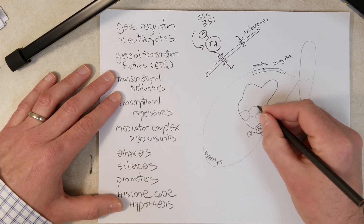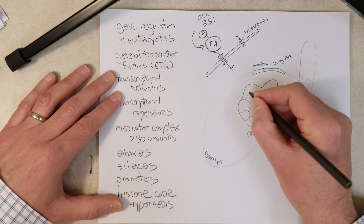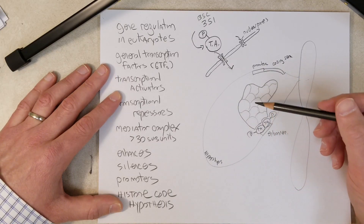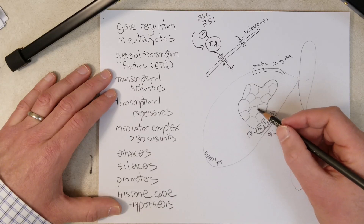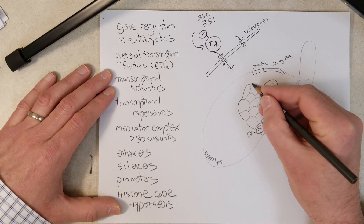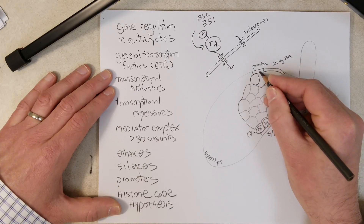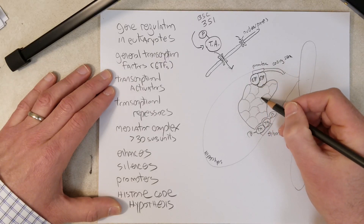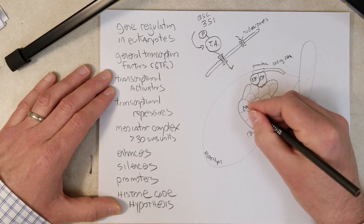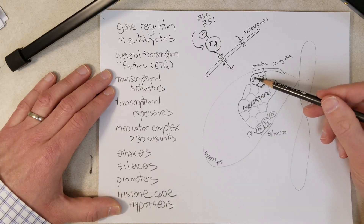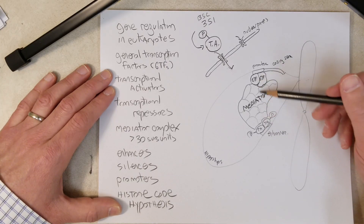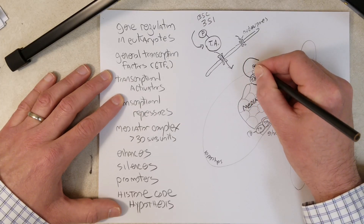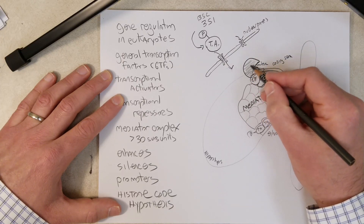You can imagine over 30 different proteins interacting in this complex. Some cells have a mediator complex missing certain subunits, and some subunits can be exchanged, which may influence how different genes are expressed in different cells. The mediator complex coordinates interactions between the transcriptional activators and the general transcription factors loaded onto the promoter. Mediator stabilizes this interaction and coordinates with the general transcription factors and RNA polymerase, loading RNA polymerase onto the promoter.